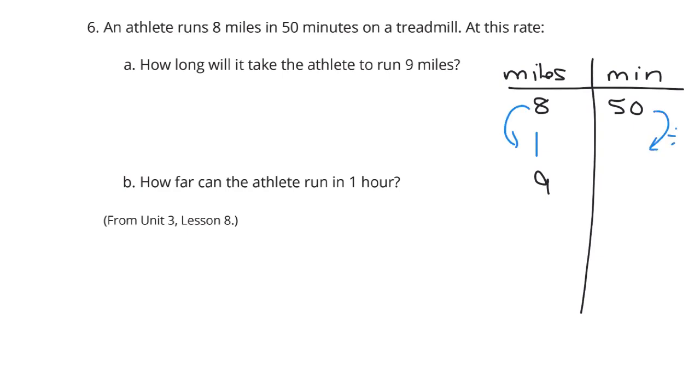Well, we divide by eight. And 50 divided by eight is six and twenty-five hundredths. And so to get then from one to nine, we're going to multiply by nine. So six and twenty-five hundredths times nine is 56 and twenty-five hundredths minutes.